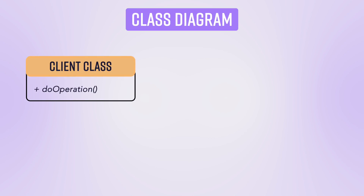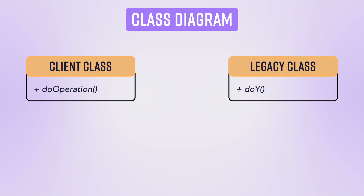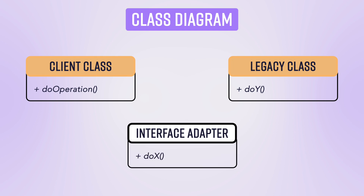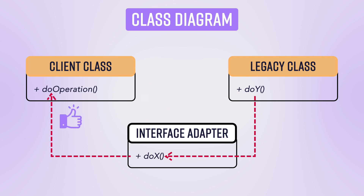Let's try to understand the same with a class diagram. Let's say you have a client class which has some method 'do operation'. You also have a legacy code which returns results for this operation, but the way this result is returned is not compatible or understandable for the client class. In that case, you introduce an interface adapter which converts the output from this function so that the client can understand it. For the client, it becomes fairly simple to understand what this interface is doing, but at the same time we are not changing anything in the legacy code. This is the concept of adapter design pattern.